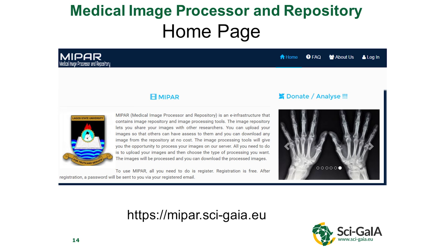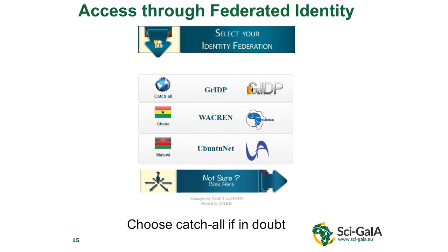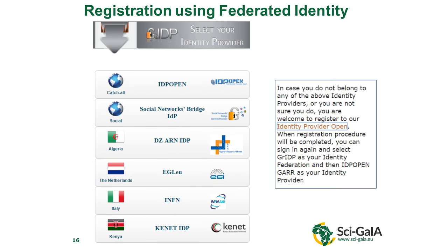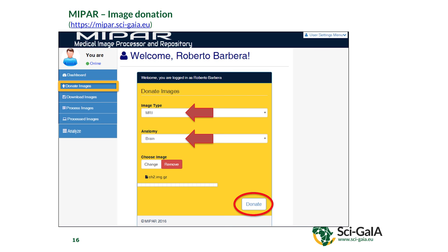The MIPA homepage and URL are shown here — feel free to visit. To use MIPA, you need a federated identity. If your organization is among those listed for West Africa, you can log in directly. If not, you can use the casual login option, which opens a general ID. Once access is granted, you can donate, download, process, and do all the things MIPA offers.